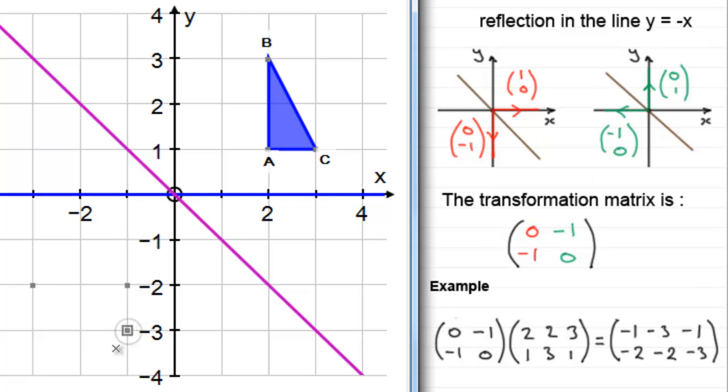So you can see that if we take our three points, that should be the image of our triangle ABC.